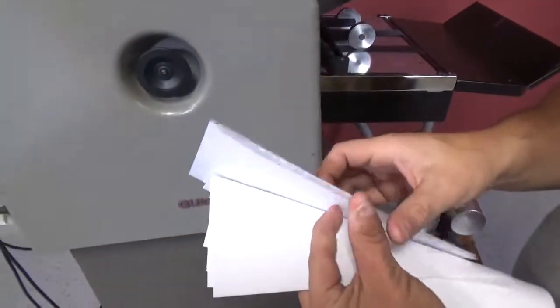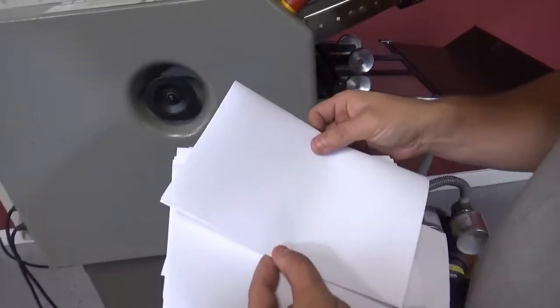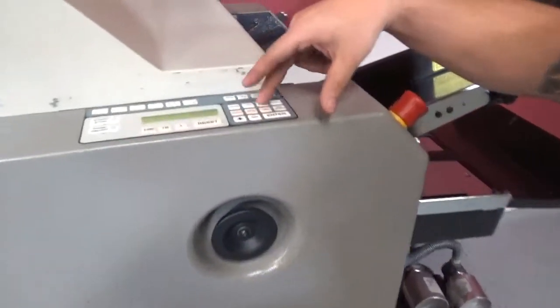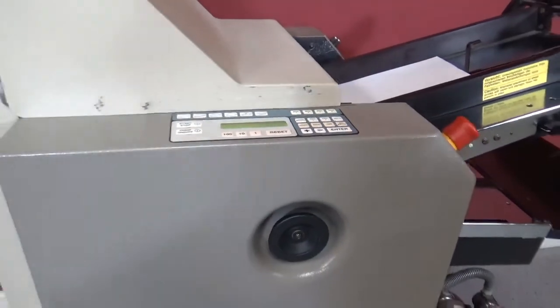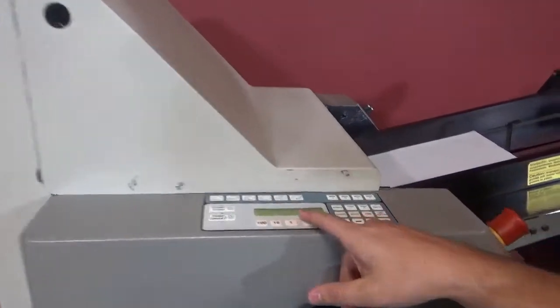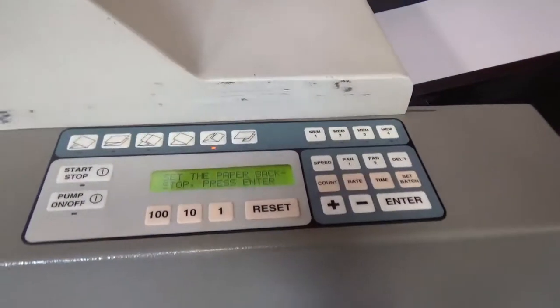You can see your half fold. Any adjustments you can make, you can actually select which tray you want, and you just hit plus or minus. So we can go from that to another one. As you can see here, it's going to say select paper stop, your back stop.